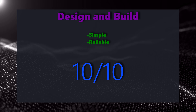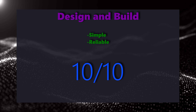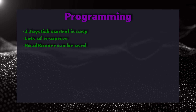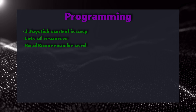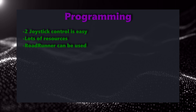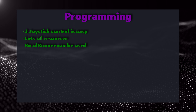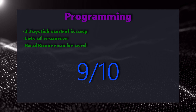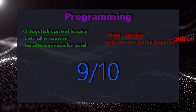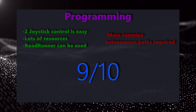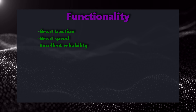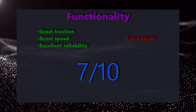For the design and build rating, tank gets a 10 out of 10 for simplicity and reliability. For programming, 2-joystick tank driving — where the left joystick controls the left side and right controls right — is incredibly simple to code, and plenty of resources are available. Roadrunner, a closed-loop path following library, is able to be easily implemented for accurate autonomous as well. Programming gets a 9 out of 10 — it only loses a point because in autonomous, more complex paths are required because of the drivetrain's inability to strafe. Feasibility: tank gets a 9.5 out of 10. Functionality: because of the speed, traction, and reliability, achieves a 7 out of 10, also because of its inability to strafe.